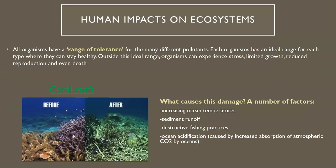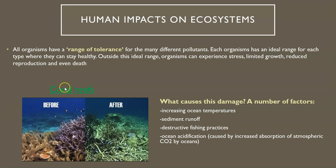I'm going to start talking about the different human impacts we have on ecosystems, mostly what sort of pollution we're adding to different ecosystems. But before I start, I wanted to talk about something called the range of tolerance. All organisms have a range of tolerance for many different pollutants, because most organisms are exposed to natural levels of these pollutants. Everyone has an ideal range so they can be exposed to it and stay healthy. When you step outside that ideal range, organisms can experience stress, not grow as well, struggle to reproduce, and even die.